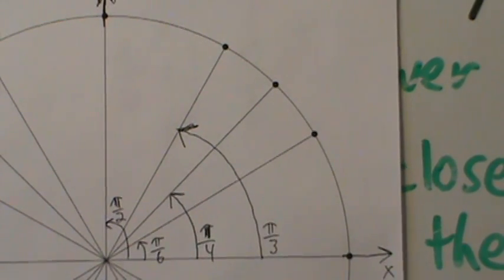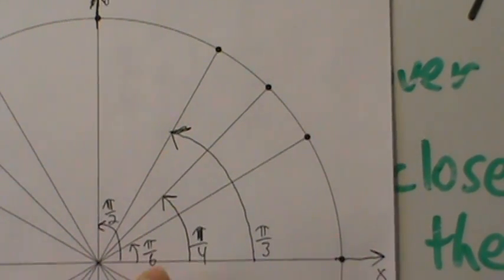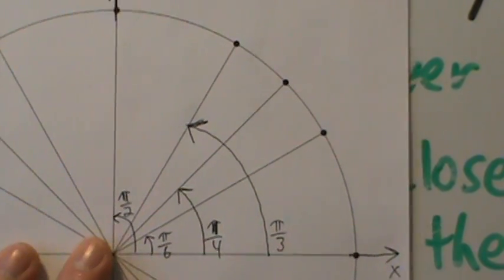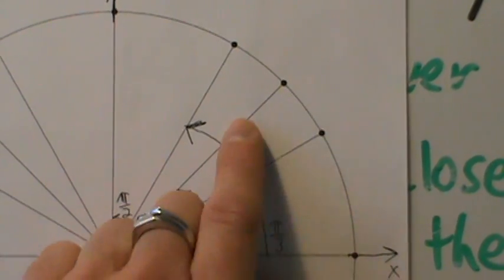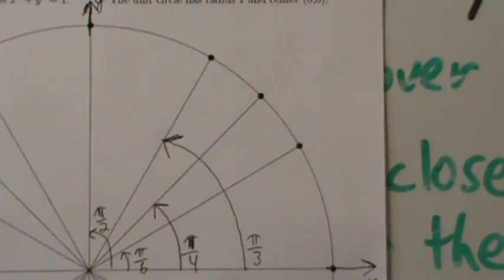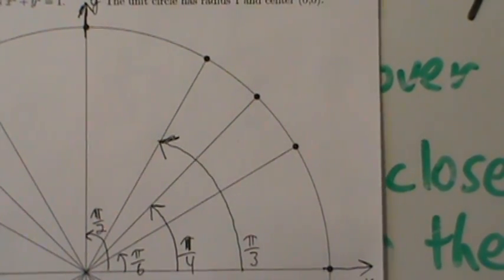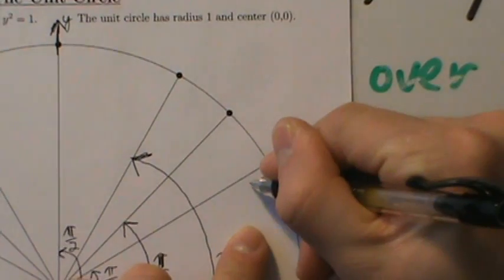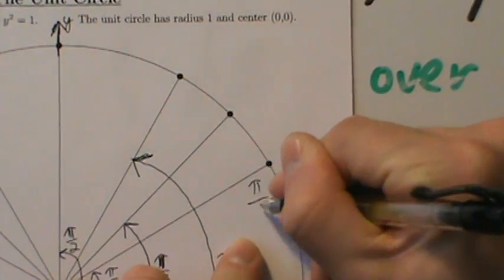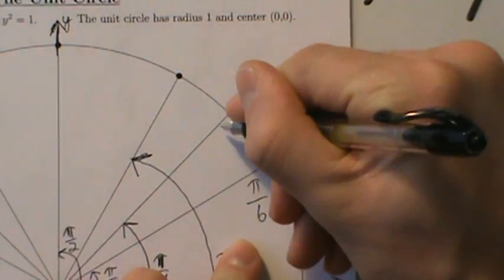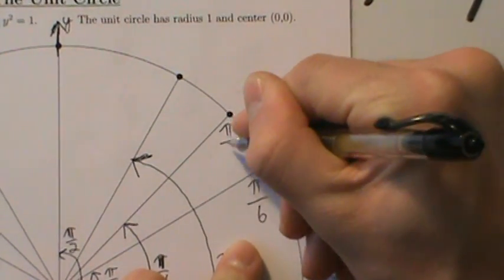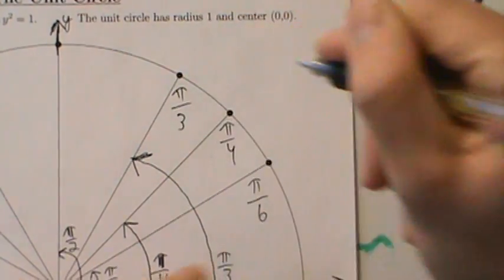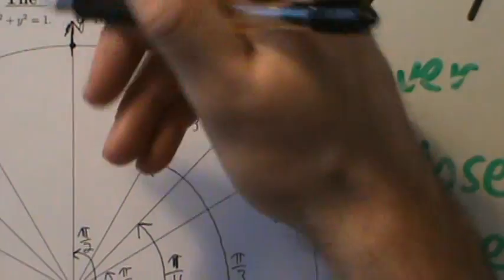So I'm going to label the angles up here since we don't have enough room inside. The angle corresponding to the first point is pi over 6, the next is pi over 4, then pi over 3, and pi over 2.